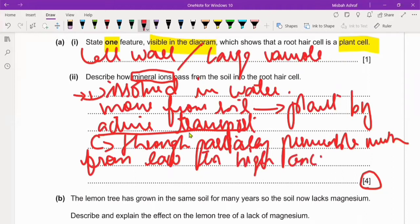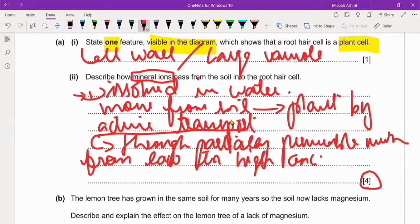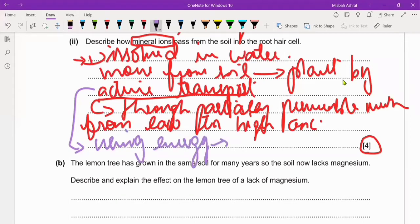From low to high concentration through partially permeable membrane, then into the cortex, then into the xylem. They move through active transport utilizing energy, and from where does that energy come from? That comes from respiration. Four marks, this is sufficient.